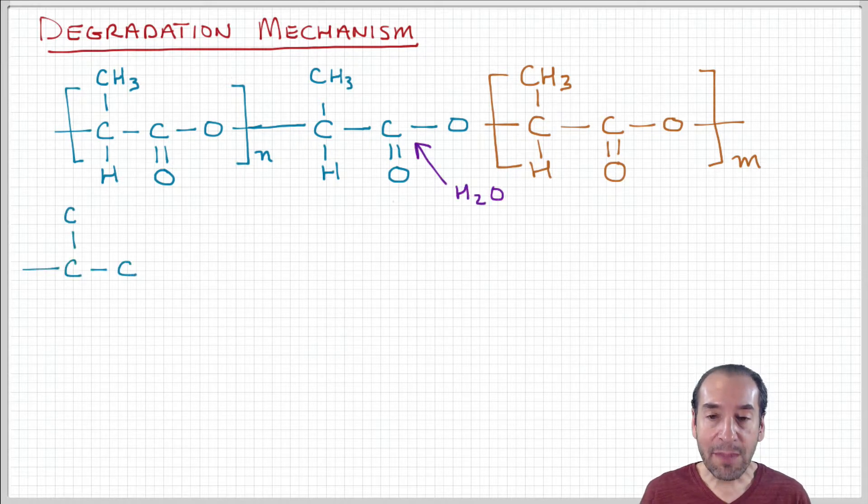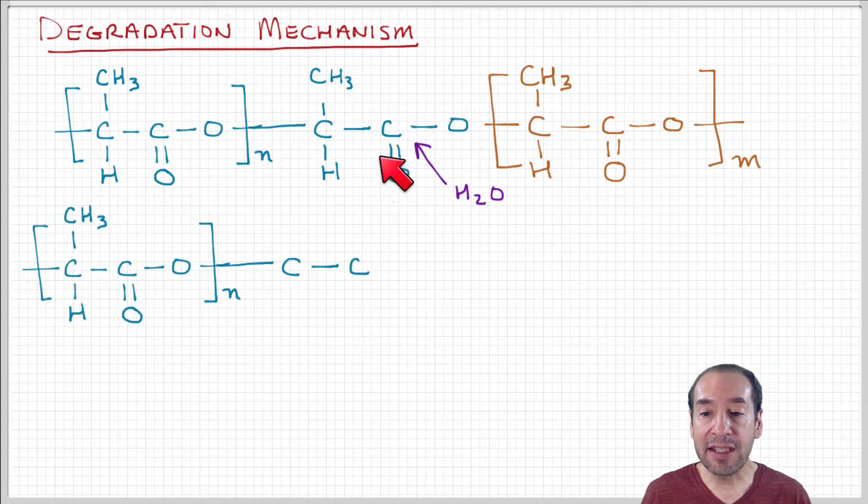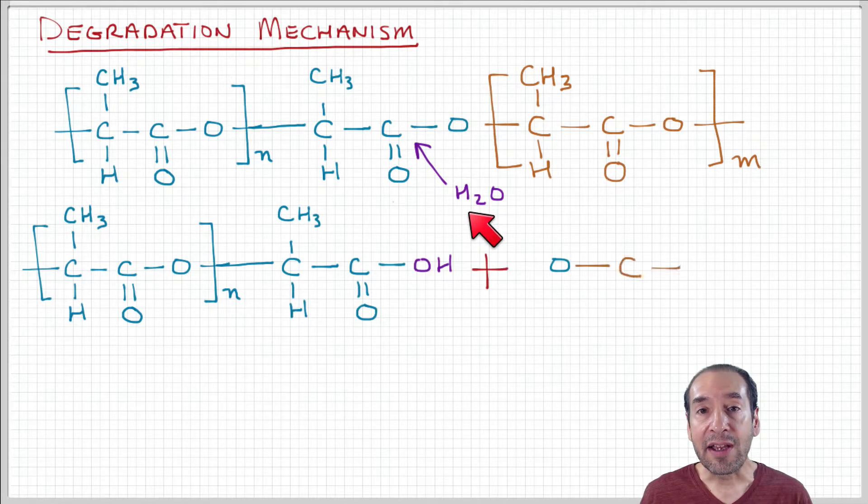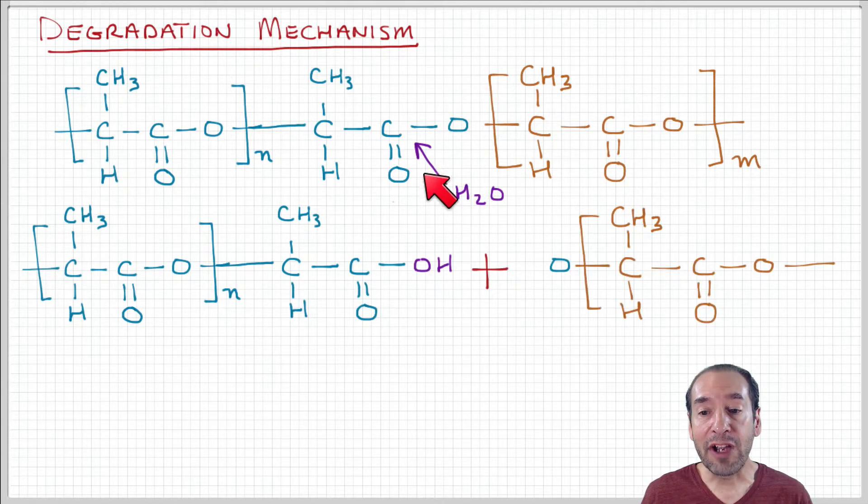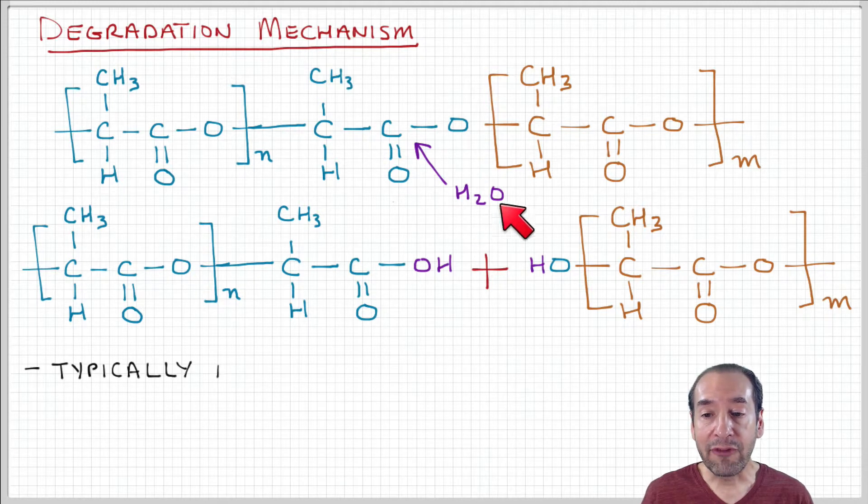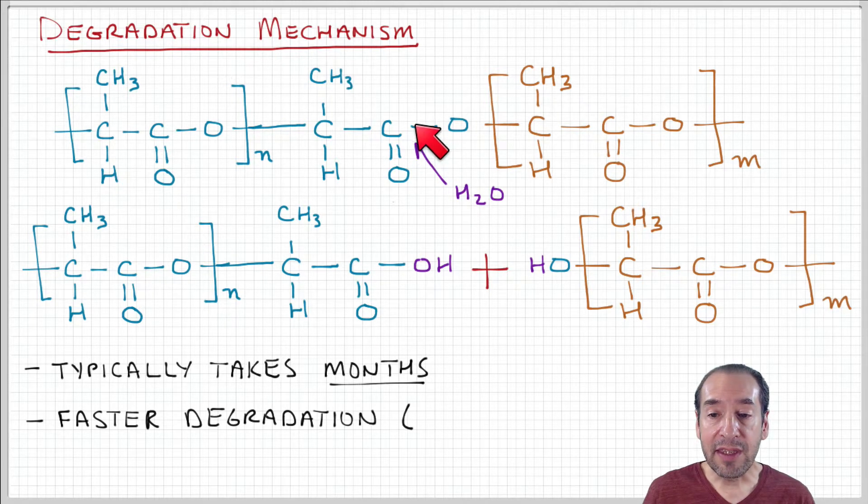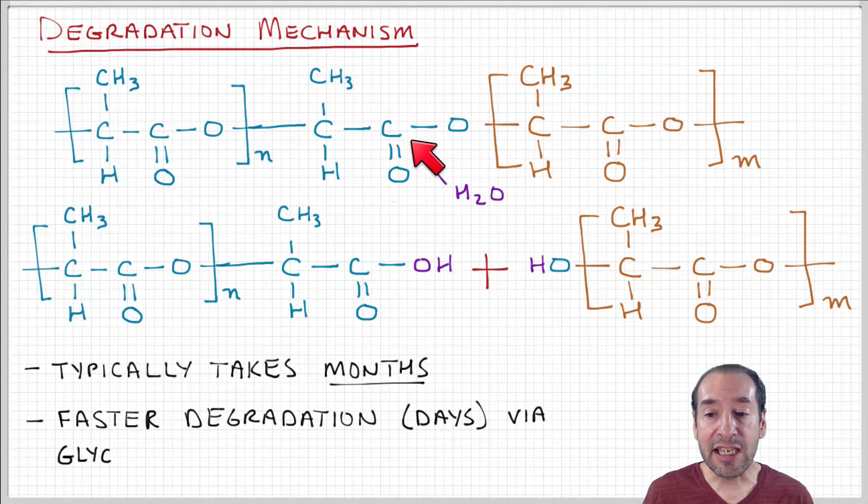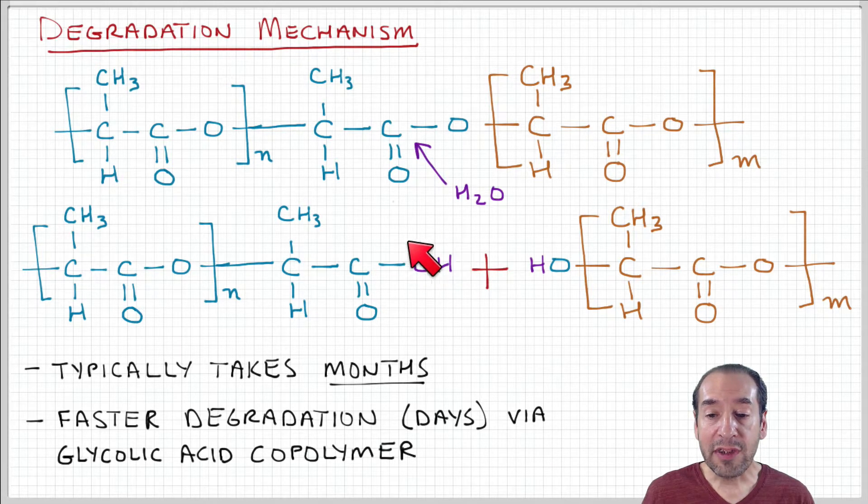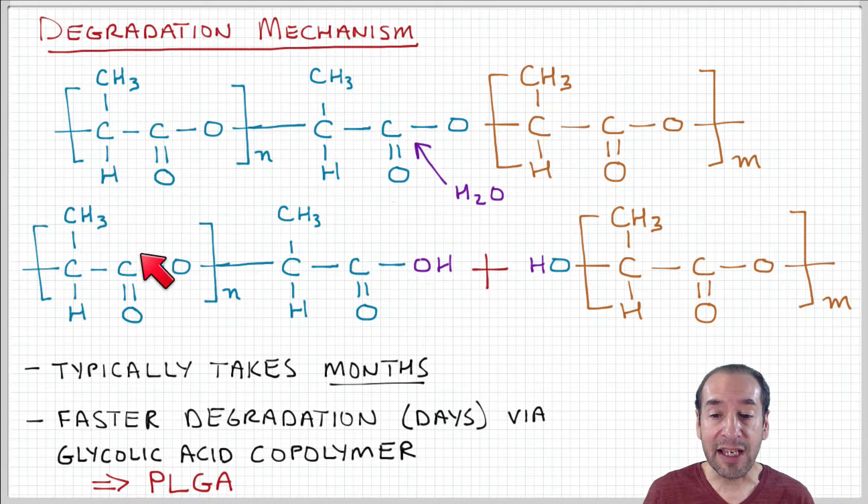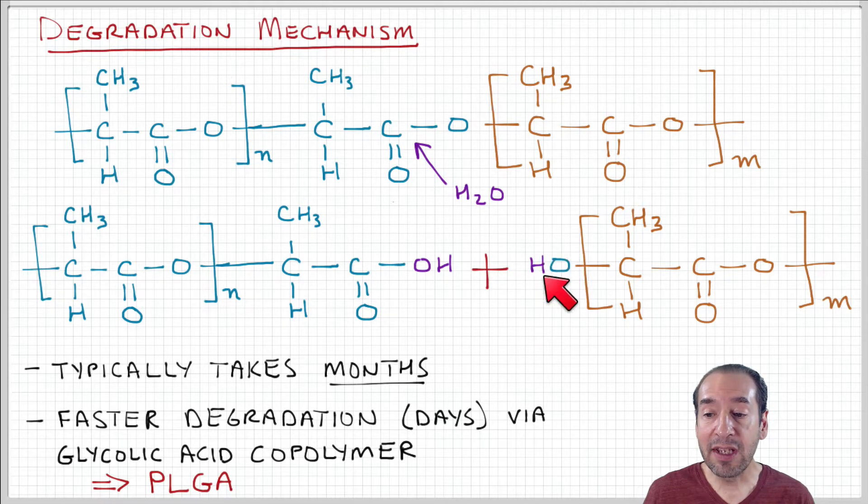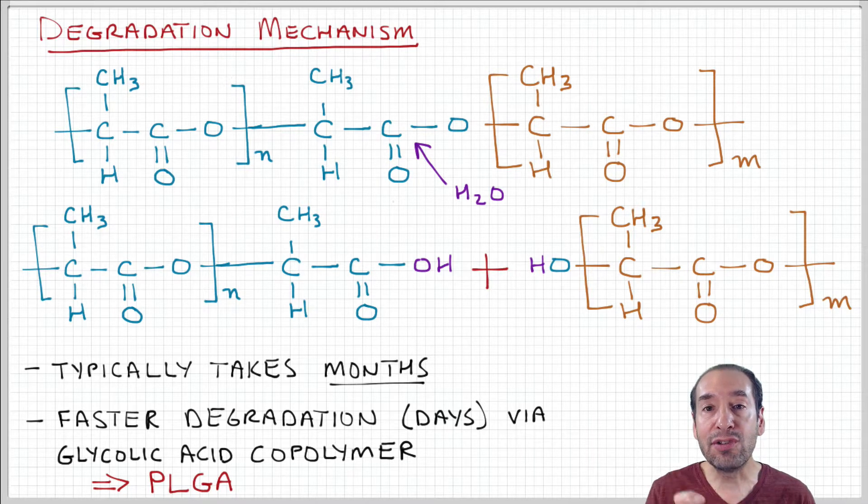Now we can imagine that something comes in and attacks this ester linkage. It can be water or other environmental factors, but water is one factor that can be at play. When this group is attacked, the ester linkage is cleaved and an OH group from the water caps the polymer chain at this location, the left-hand side. The remaining H group then forms an OH that caps the right-hand side of the polymer chain. We now cleave the polymer chain into two shorter fragments.